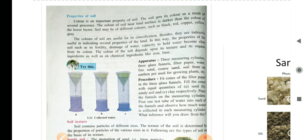The colours of the soil are useful for its classification. Besides, they are indirectly useful in indicating the several properties of the land. In this way, the properties of the soil such as its infertility, drainage of water, capacity to hold water becomes clear from its colour. The colour of the soil depends upon its texture and its organic ingredients as well as on the chemical ingredients like iron and lime. Organic means plant or animal remains.